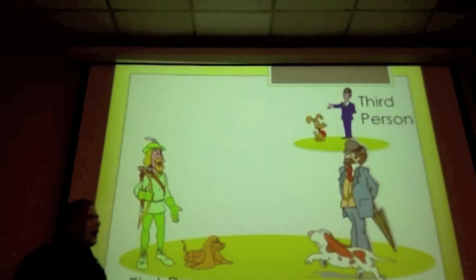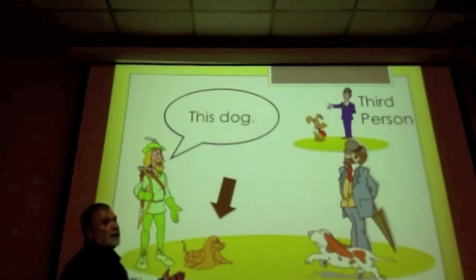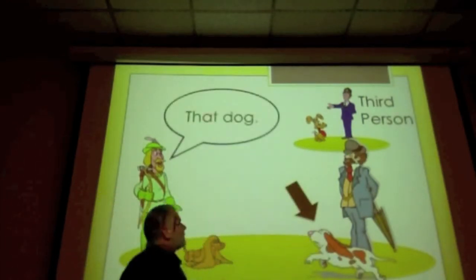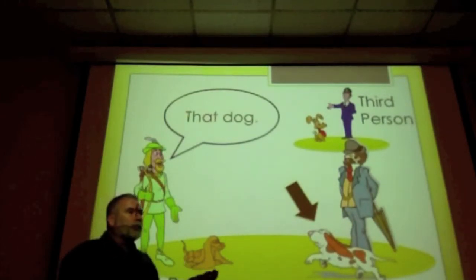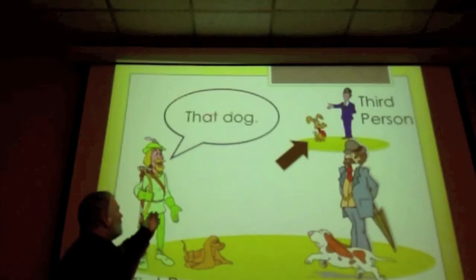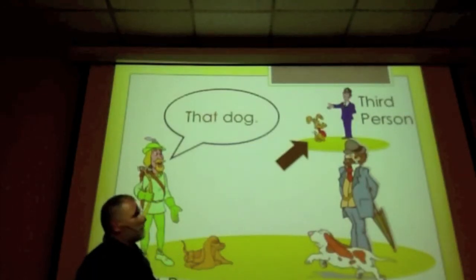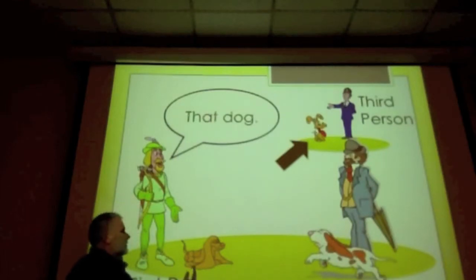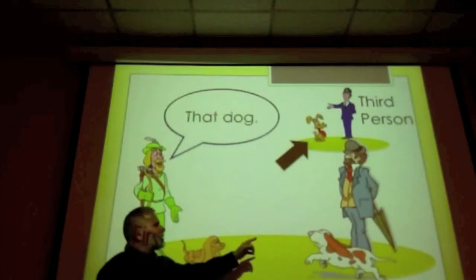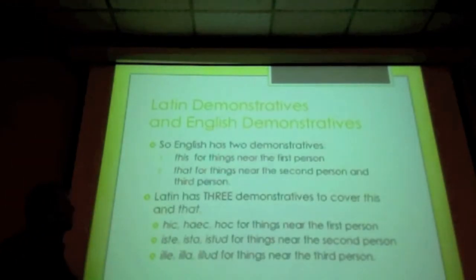So Robin Hood uses 'this' and 'that' according to standard English usage. If he refers to a dog near himself, he says 'this dog,' because 'this' is used for things near the first person. If he refers to a dog near the man with the umbrella, he says 'that dog,' because 'that' is used for things near the second person. If he refers to a dog associated with the Bobby — the third person — he also says 'that dog.' So English has two demonstratives: 'this' for the first person, and 'that' for the second and third person.